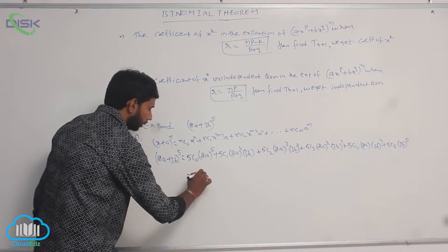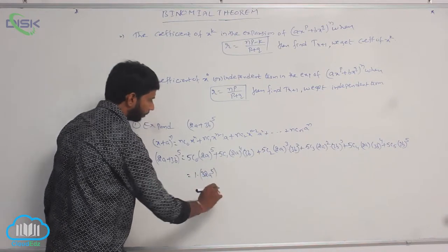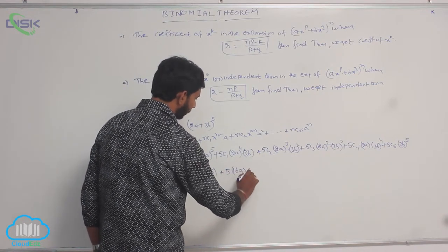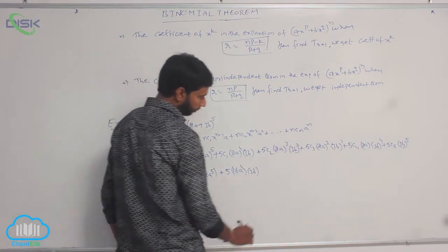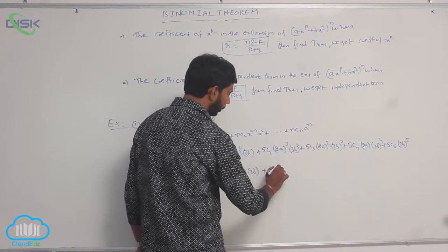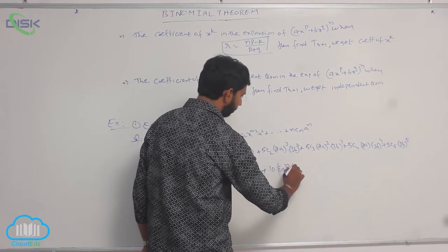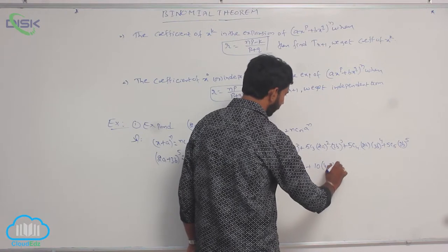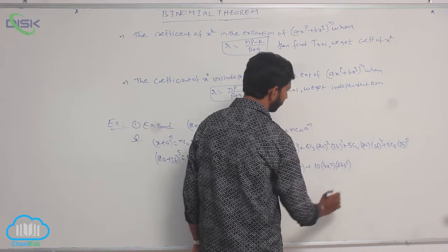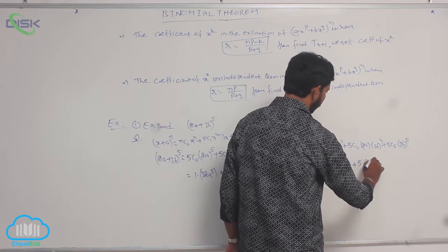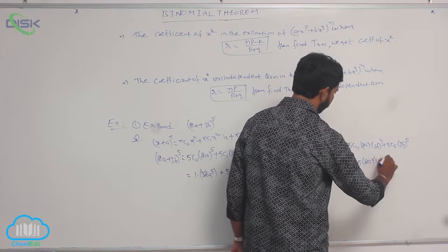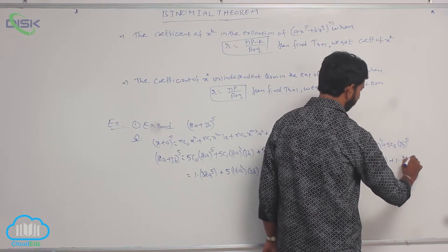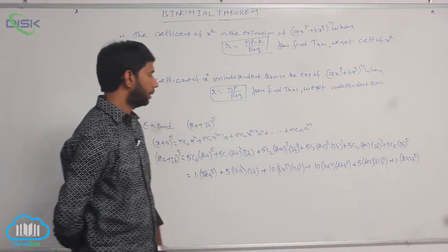Substituting values: 5C0 = 1, giving 32a^5. Plus 5C1 = 5, giving 5·16a^4·3b. Plus 5C2 = 10, giving 10·8a^3·9b^2. Plus 5C3 = 10, giving 10·4a^2·27b^3. Plus 5C4 = 5, giving 5·2a·81b^4. Plus 5C5 = 1, giving 243b^5.